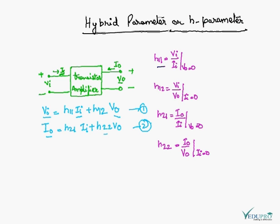H11 is given by input voltage upon input current. Voltage upon current is impedance. So H11 is input impedance.